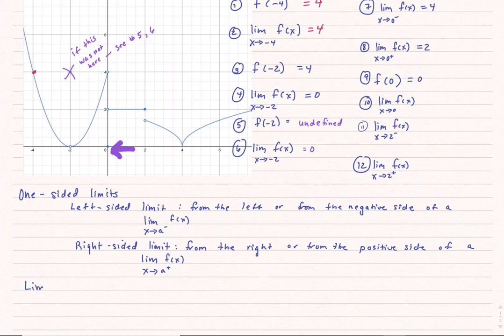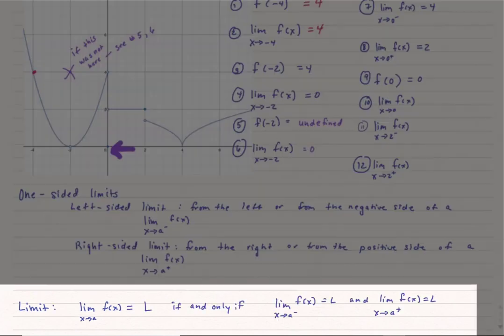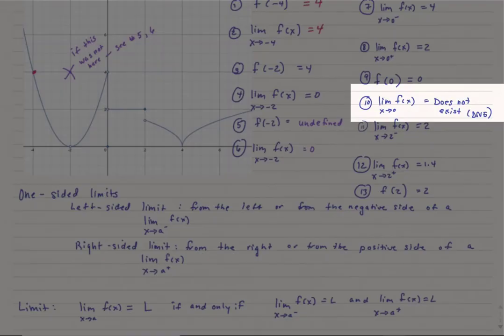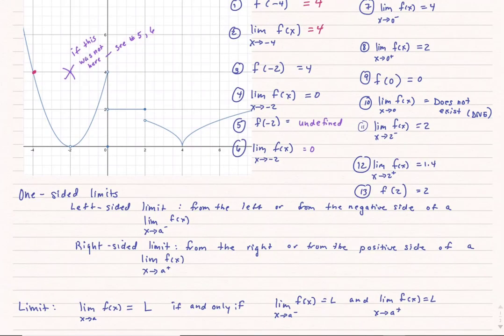However, to talk about what the limit of f of x is when x approaches 0, without saying the plus or the minus, that means we have to talk about the actual definition of a limit a little bit more. A limit as x approaches a only exists if, and only if, the limit from the left-hand side and the limit from the right-hand side is the same value L. Therefore, the limit as x approaches 0 of f of x does not exist. Sometimes that's abbreviated as DNE.